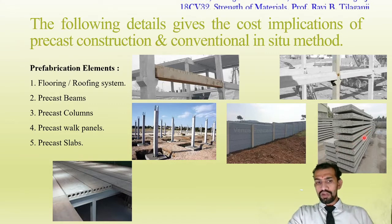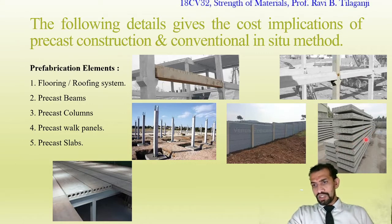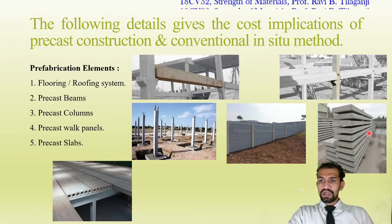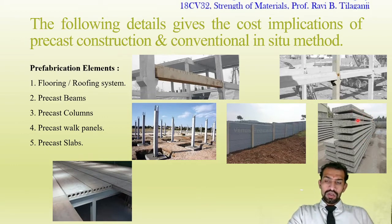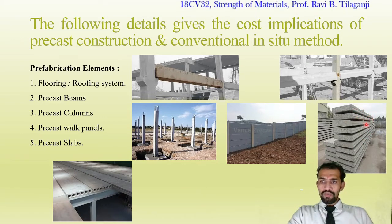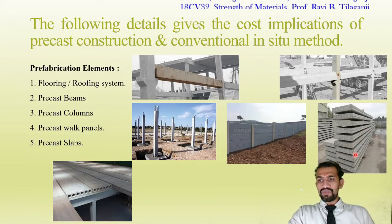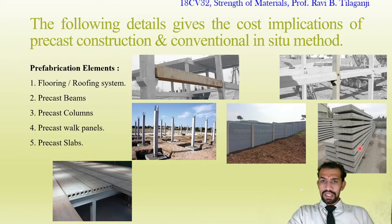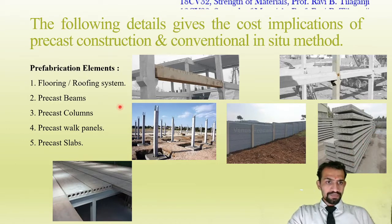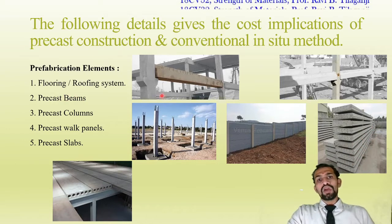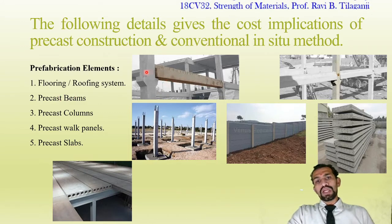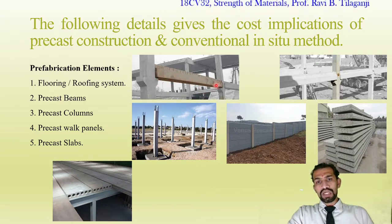For precast slabs, reinforcements are placed and a width of about one meter with a length of five to six meters is maintained. Beyond that, deflection occurs in the horizontal member due to dead load, requiring more reinforcement. For heavy structures, a length of up to three meters (10 feet) is maintained. Precast beams are the horizontal members resting on column supports.